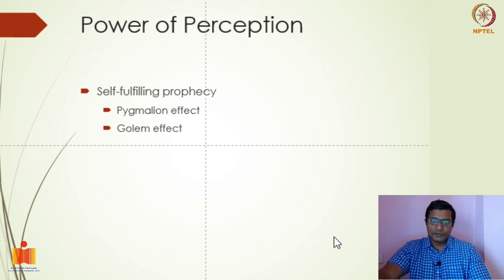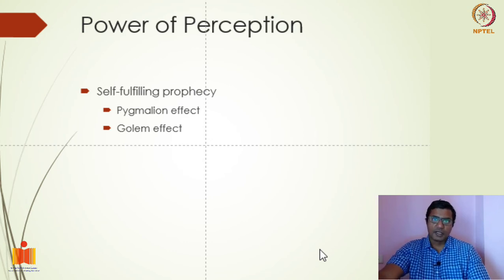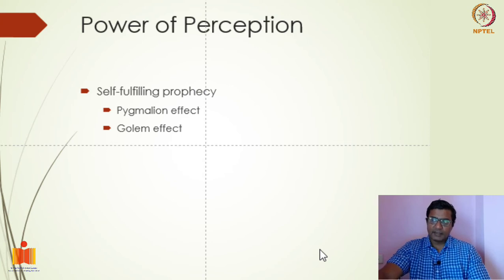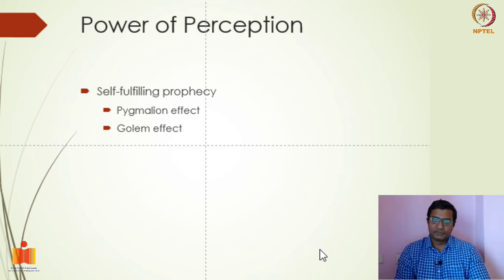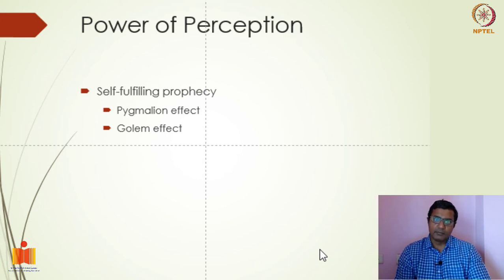Why is perception a powerful thing in real life or in day-to-day life? Both examples fall under the idea called self-fulfilling prophecy. Self-fulfilling prophecy means when we start perceiving about some person in a certain way, there are more chances that it will become true. Perception is subjective — you think this is what it is, but it may not be real. But self-fulfilling prophecy says when you start looking at things in a certain way, there are more chances that it will become real, especially in terms of people.